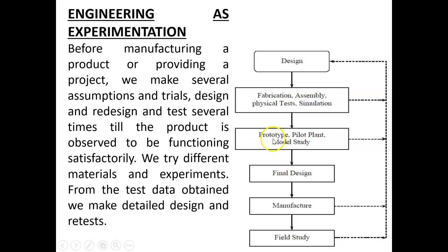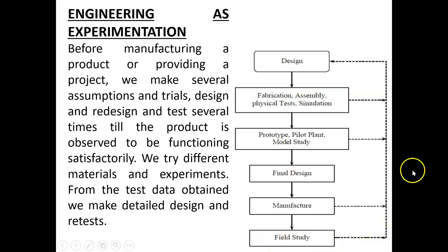If the model or the prototype is incorrect, it will automatically feed back to the previous session and the core values will be modified. Once approved, we will get the final design. During the manufacturing time also, if there is any problem, we can do the rework. Finally we go with the field study — field study means it is a market search. Once we release the product, if there are any problems or flaws in the product, the feedback will go back to the design phase.